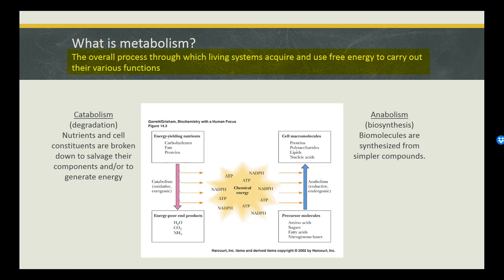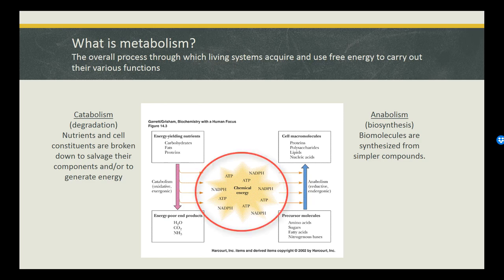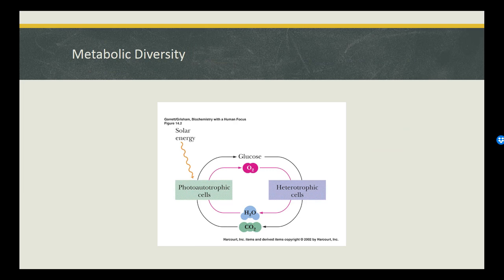Metabolism can be divided into two categories: catabolism and anabolism. Catabolism is where macromolecules are broken down, while anabolism is where macromolecules are synthesized by the cell from smaller, simpler compounds and typically requires energy input.